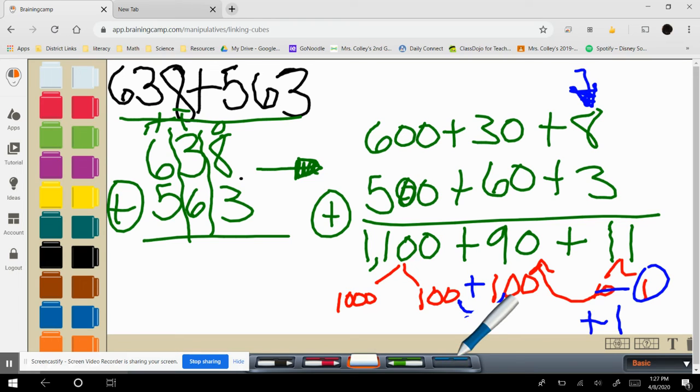So just for right now, I'm going to put a 0 in its place. I have no tens plus 200 plus 1,000. I put the 0 there in the tens place so that you would know that there are no tens.